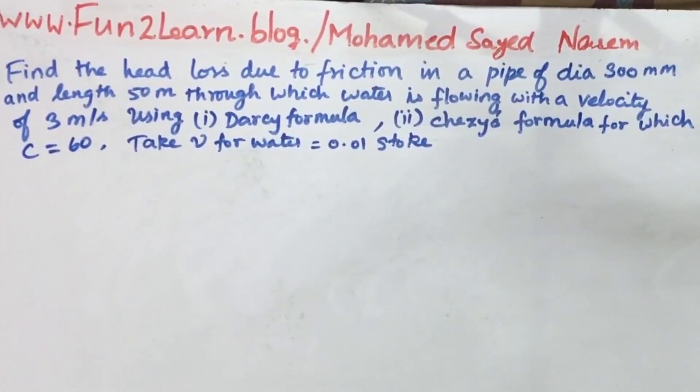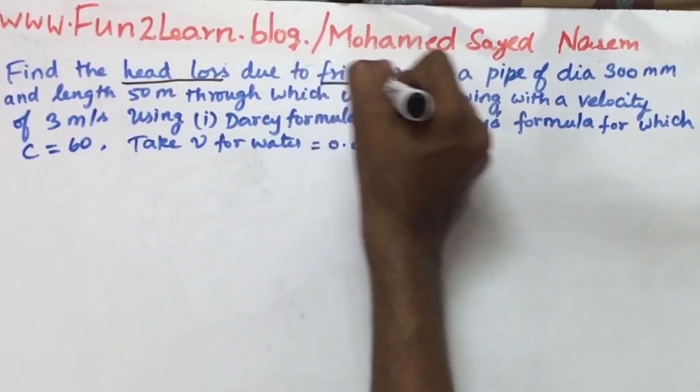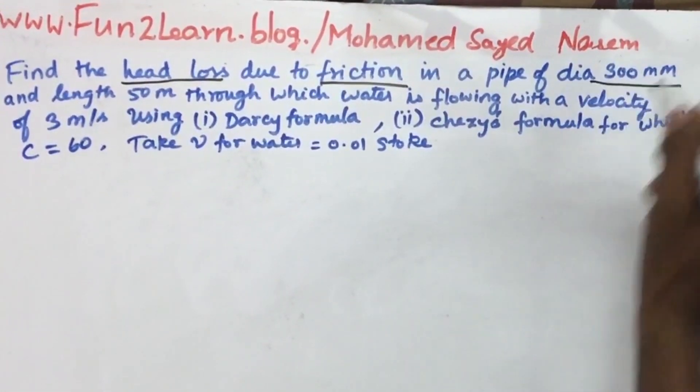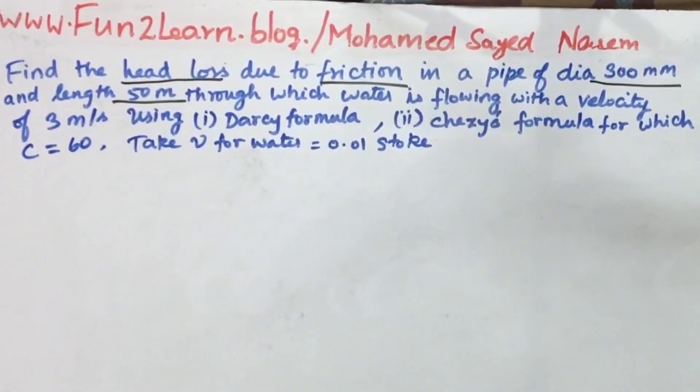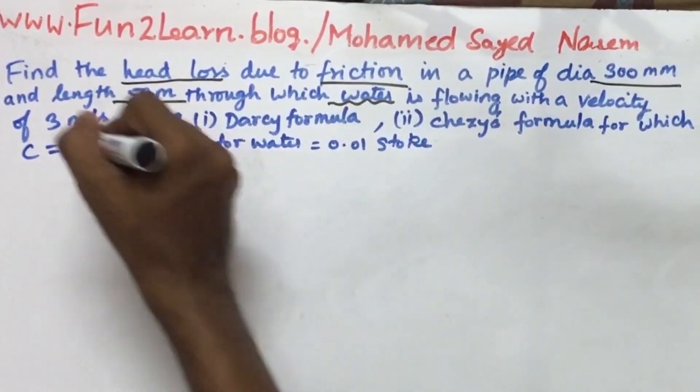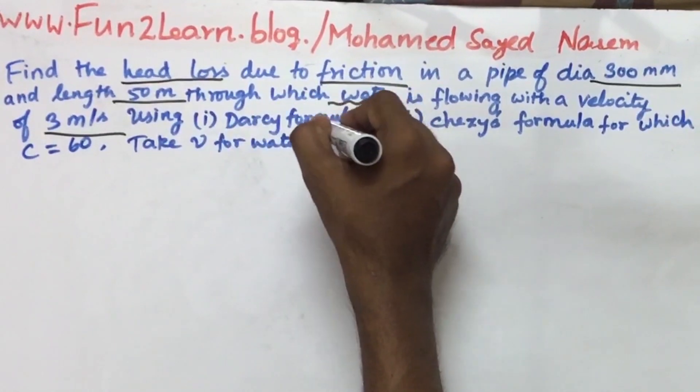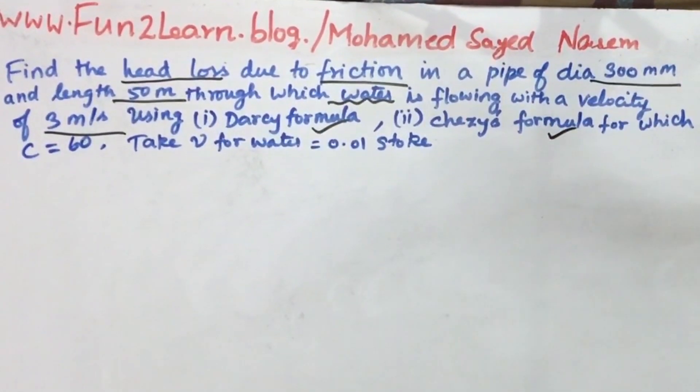The problem is to find the head loss due to friction in a pipe of diameter 300 mm and length 50 meters through which water is flowing with a velocity of 3 meters per second, using Darcy's formula or Chezy's formula.